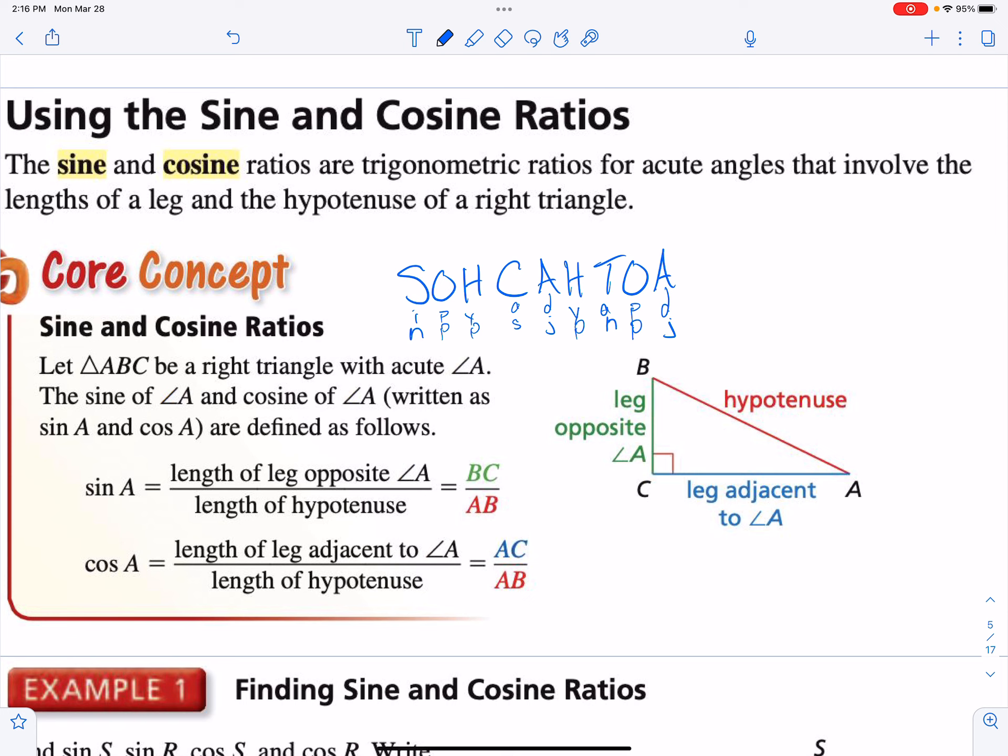The sine and cosine ratios are used on the acute angles in a right triangle. The notes that are in the core concept box are great. It gives you the ratio, it gives you the triangle, it gives you the side lengths. What I always encourage students to remember is this acronym SOHCAHTOA. Because if you can kind of sound it out in your head, it helps you memorize how to set them up. Sine is going to be opposite over hypotenuse, cosine is adjacent over hypotenuse, and tangent we already learned is opposite over adjacent.